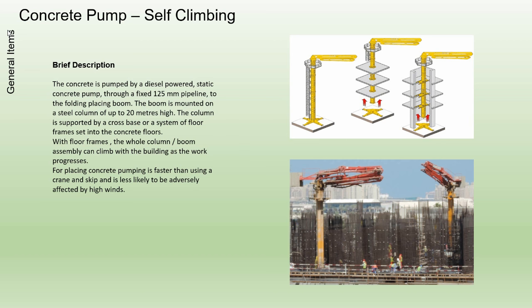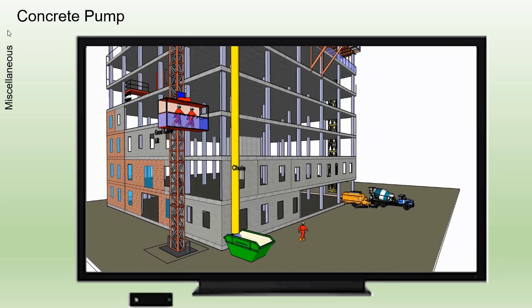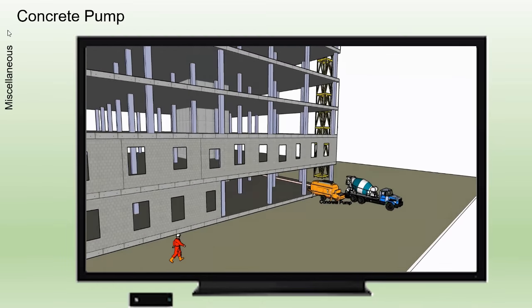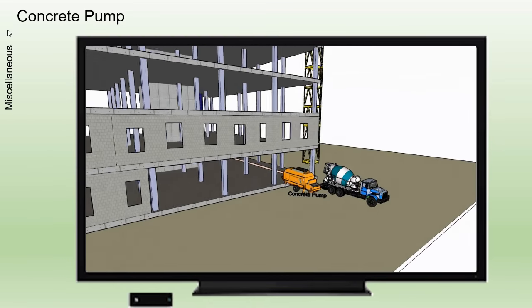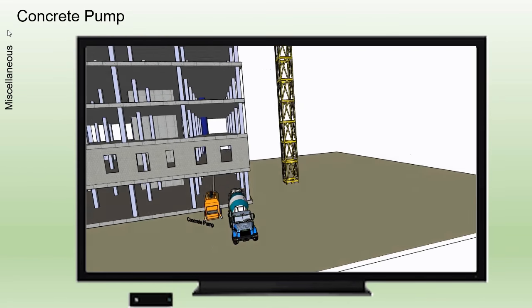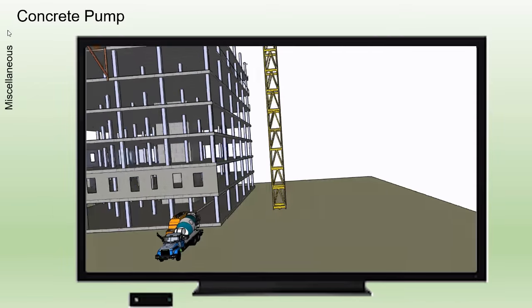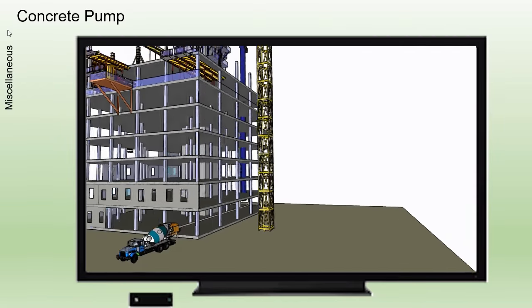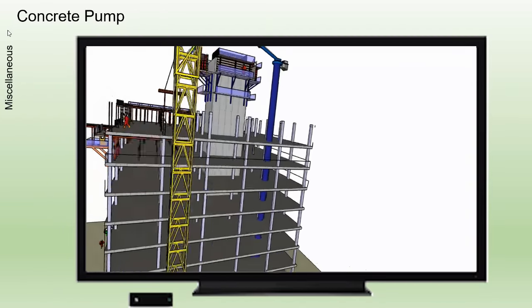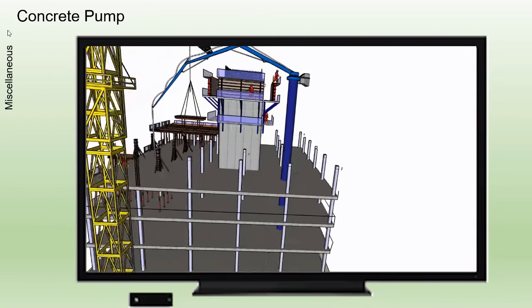Concrete Pumps. The concrete is pumped by a diesel-powered static concrete pump, through a fixed 125 mm pipeline, to the folding placing boom.